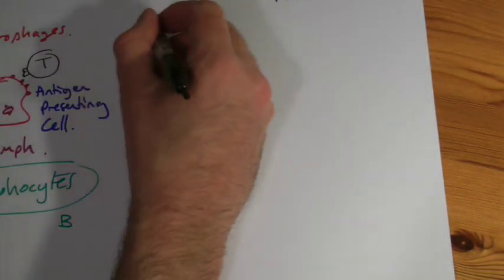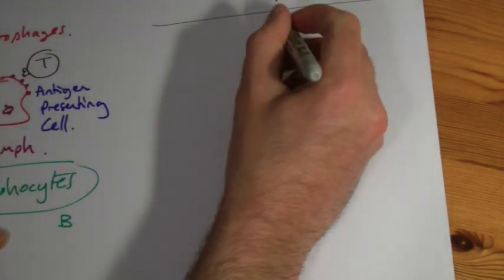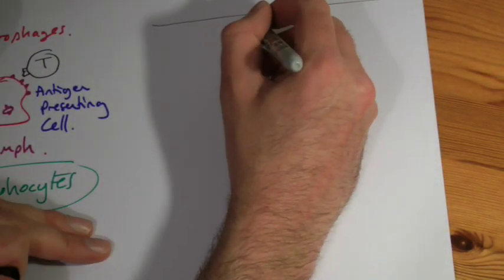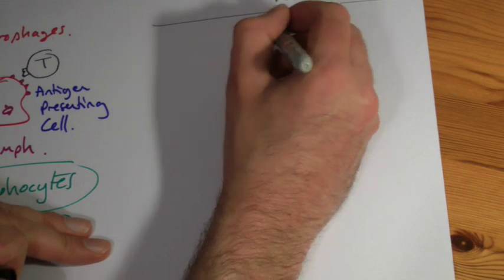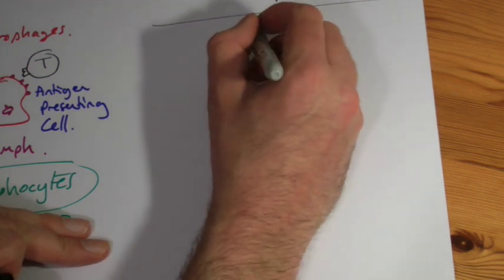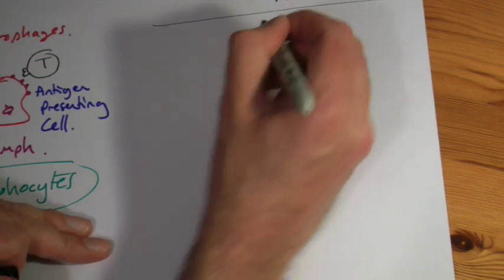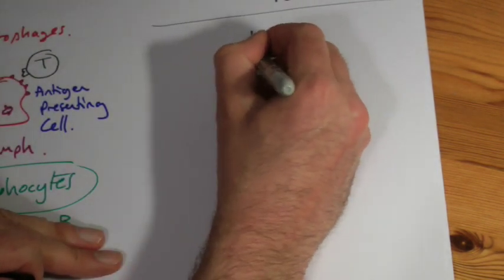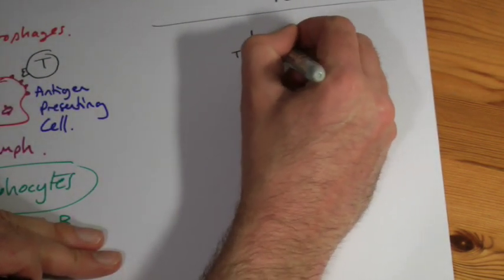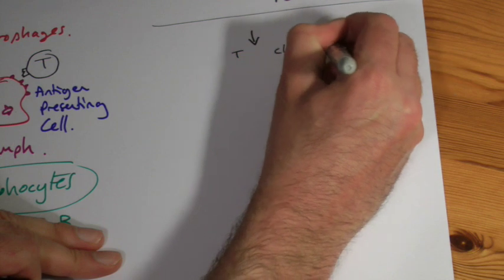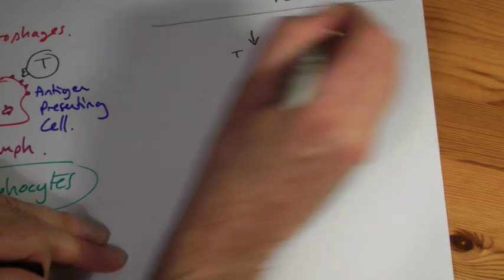Let's just go through the steps. So our antigen presenting cell has arrived in the lymph node. And we identify the correct T cell. Now, this is called clonal selection.